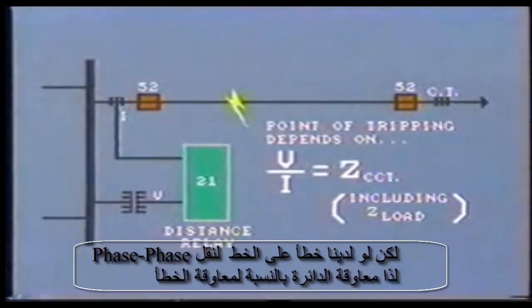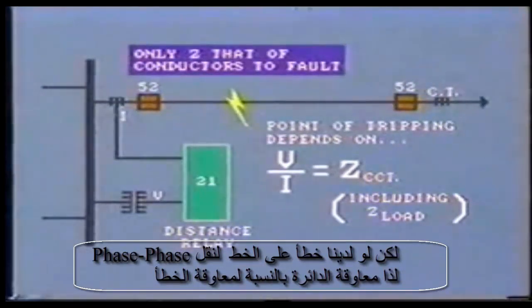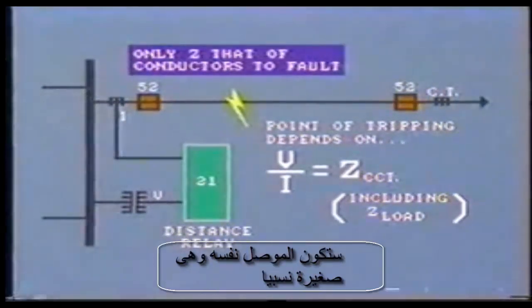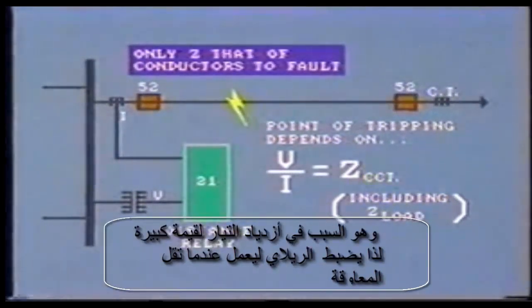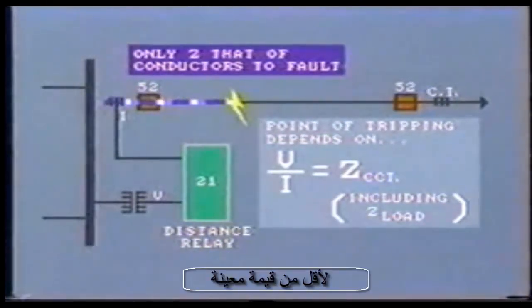However, if we have a fault on the line — say, a direct phase-to-phase fault — then the circuit impedance to the fault is only that of the conductors themselves, and as we know, this is a relatively small value. Indeed, this is the very reason that the current increases to such a high magnitude. So the relay is set to operate when the measured impedance falls below a specific value.